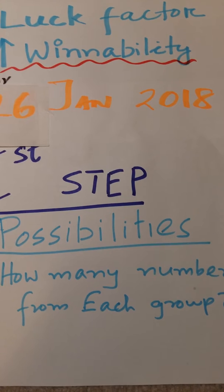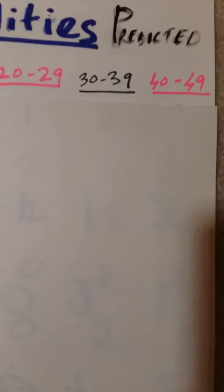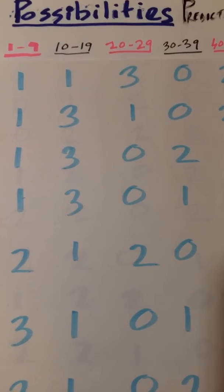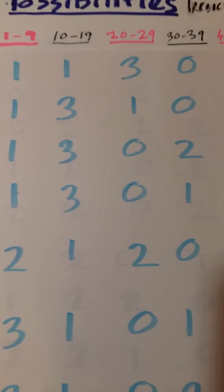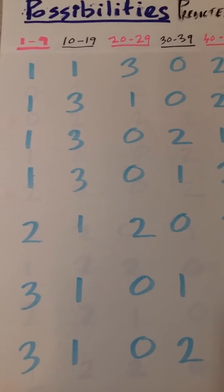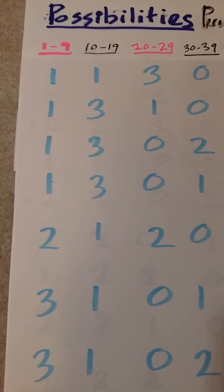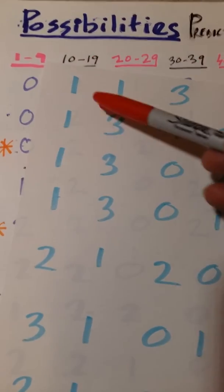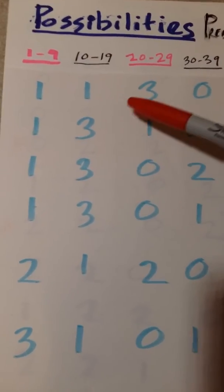As you know, these are our groups: 1 to 9, 10 to 19, 20 to 29, 30 to 39, 40 to 49. This week we expect one of these patterns: 1, 1, 3, 0, 2.